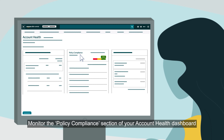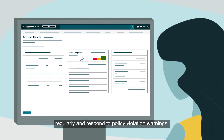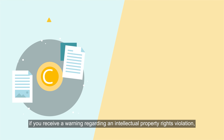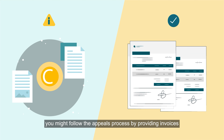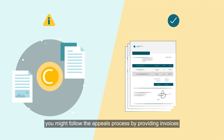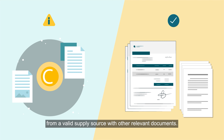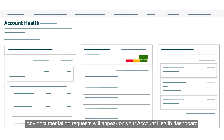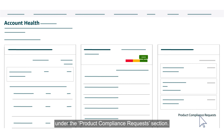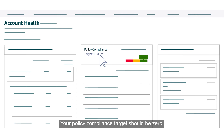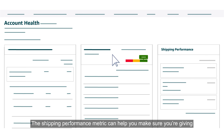Monitor the policy compliance section of your account health dashboard regularly and respond to policy violation warnings. For example, if you receive a warning regarding an intellectual property rights violation, you might follow the appeals process by providing invoices from a valid supply source with other relevant documents. Any documentation requests will appear on your account health dashboard under the product compliance request section. Your policy compliance target should be zero, meaning you should aim to avoid all policy violations.